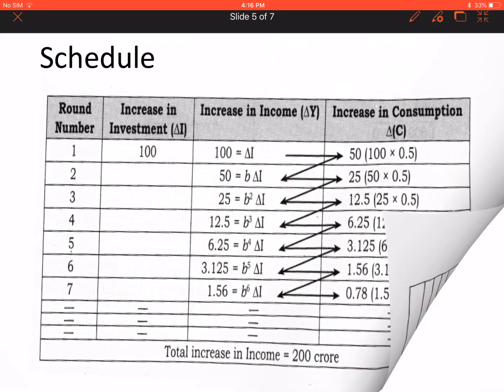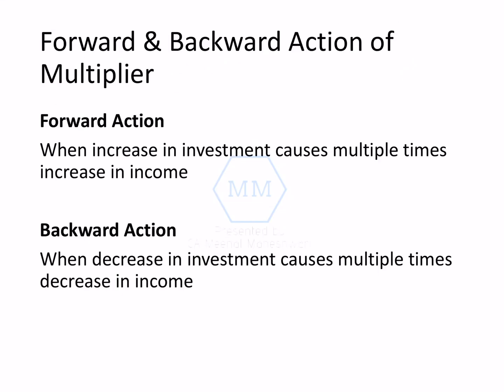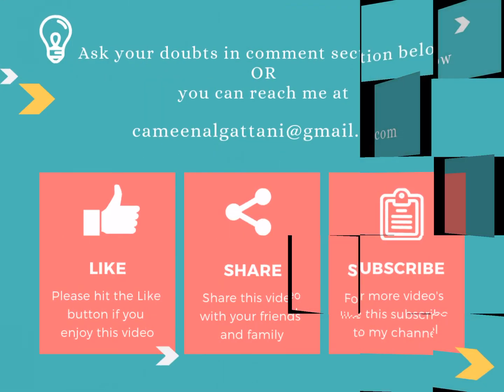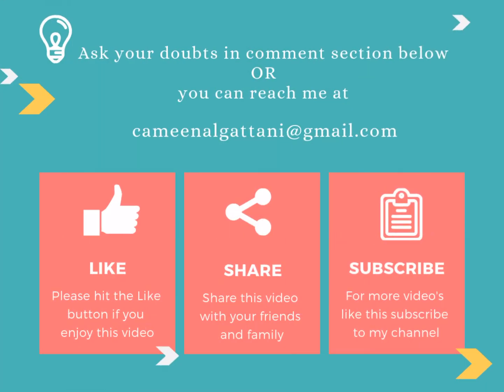Now moving on to the last thing: forward and backward action of multiplier. Forward action of multiplier means if there is a small increase in investment, multiple times increase happens in income. And if there is a small decrease in investment, multiple times decrease happens in income - that is backward action of multiplier. This is it with this chapter. Very important chapter, don't leave it before the exam. For any queries, post in the comment section. Thank you.